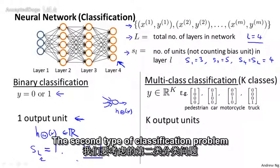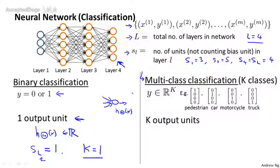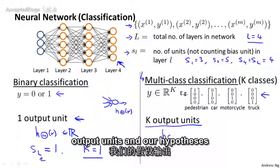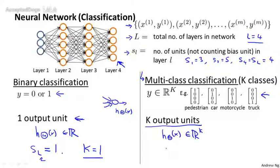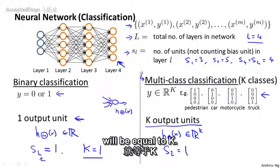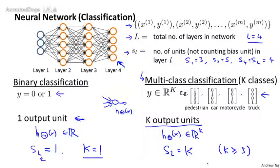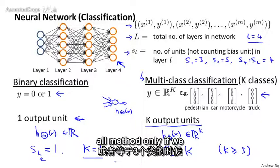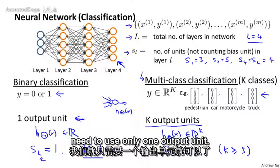The second type of classification problem we'll consider will be multi-class classification problem where we may have K distinct classes. Our earlier example had this representation for y if we had four classes. And in this case, we would have capital K output units and our hypothesis will output vectors that are K dimensional. And the number of output units will be equal to K. And usually we would have K greater than or equal to 3 in this case, because if we had two classes, we don't need to use the one versus all method. We need to use the one versus all method only if we have K greater than or equal to 3 classes. So if we had only two classes, we would need to use only one output unit.